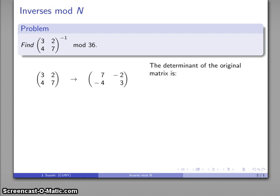Now, in real number arithmetic, the reciprocal of the determinant is easy to find. Because we're working mod 36, what we need to do is we need to find the reciprocal, the multiplicative inverse of the determinant mod 36.